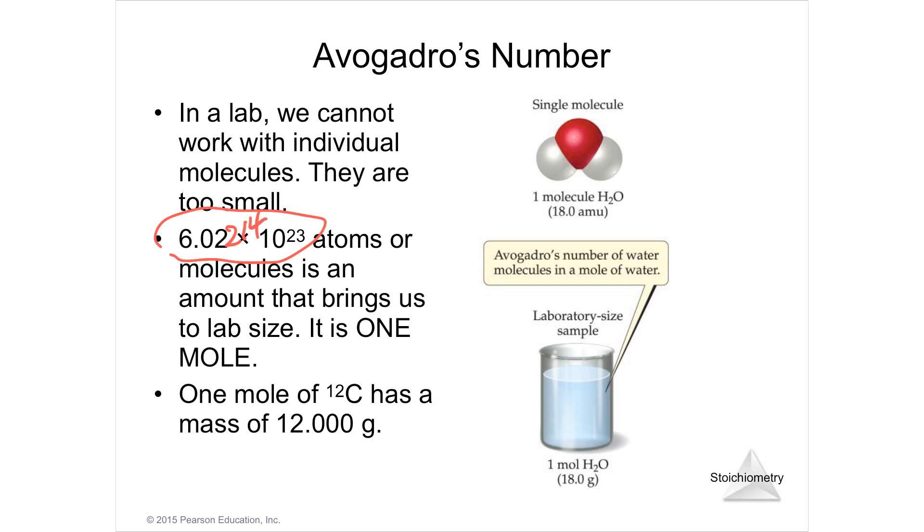Avogadro's number has to be memorized: 6.02214 times 10 to the 23rd somethings. One mole is going to be that number. Instead of saying 6.02 times 10 to the 23rd, which itself is big, just call it a mole. One mole of carbon is 12 grams of carbon.